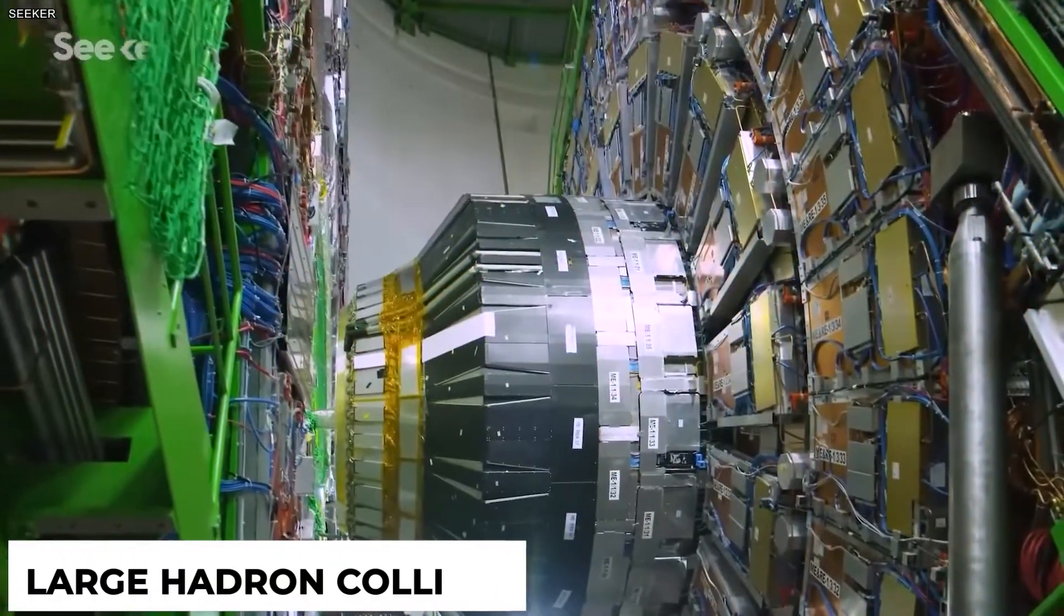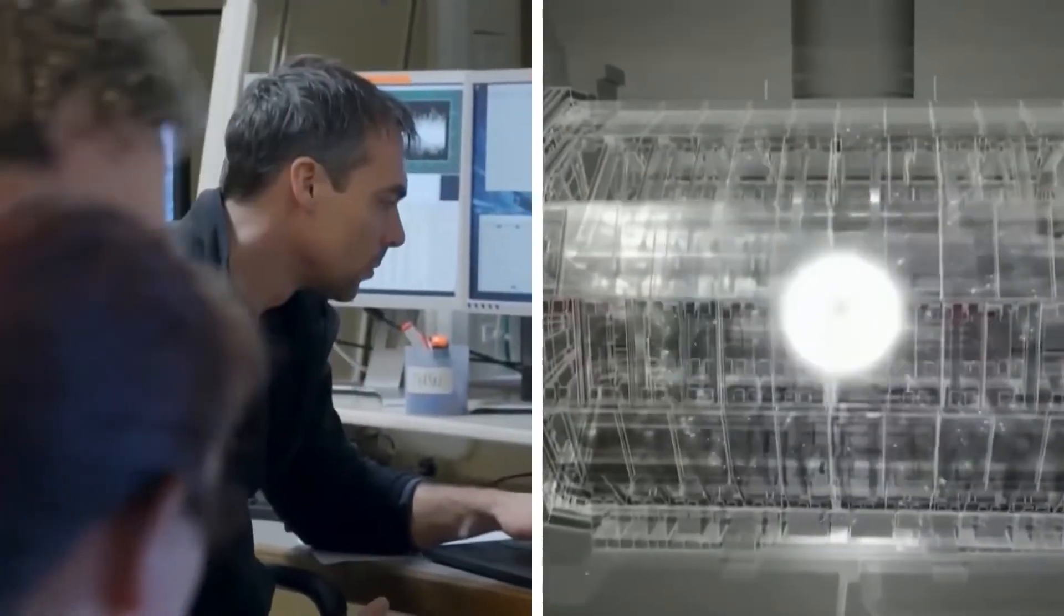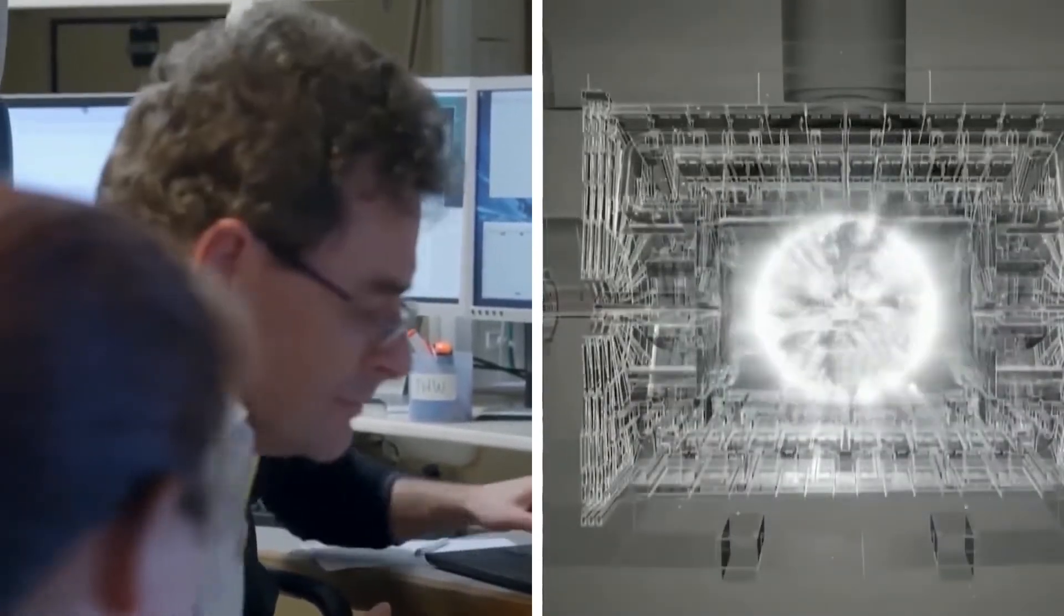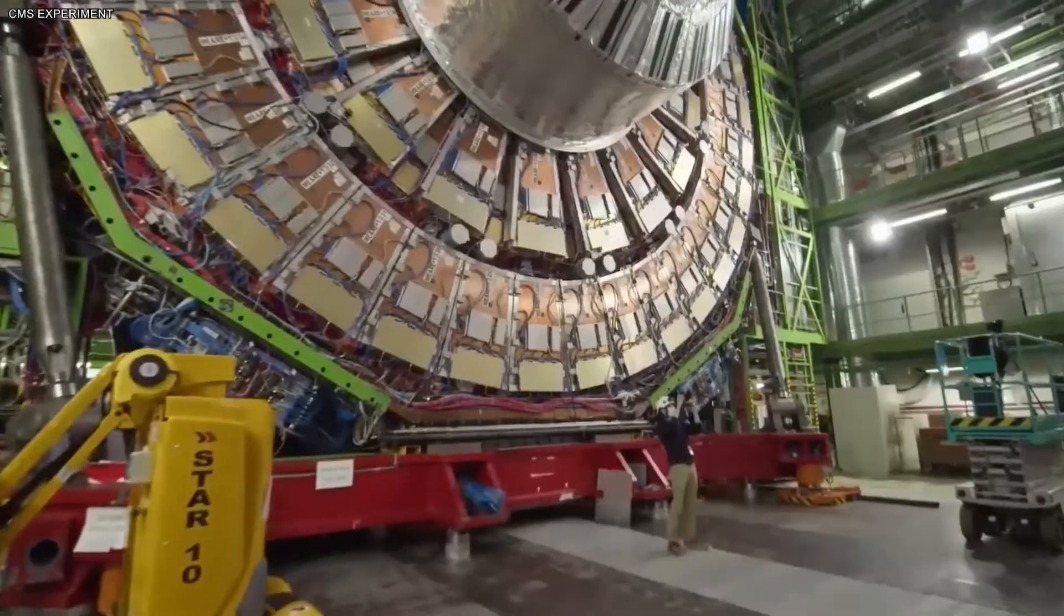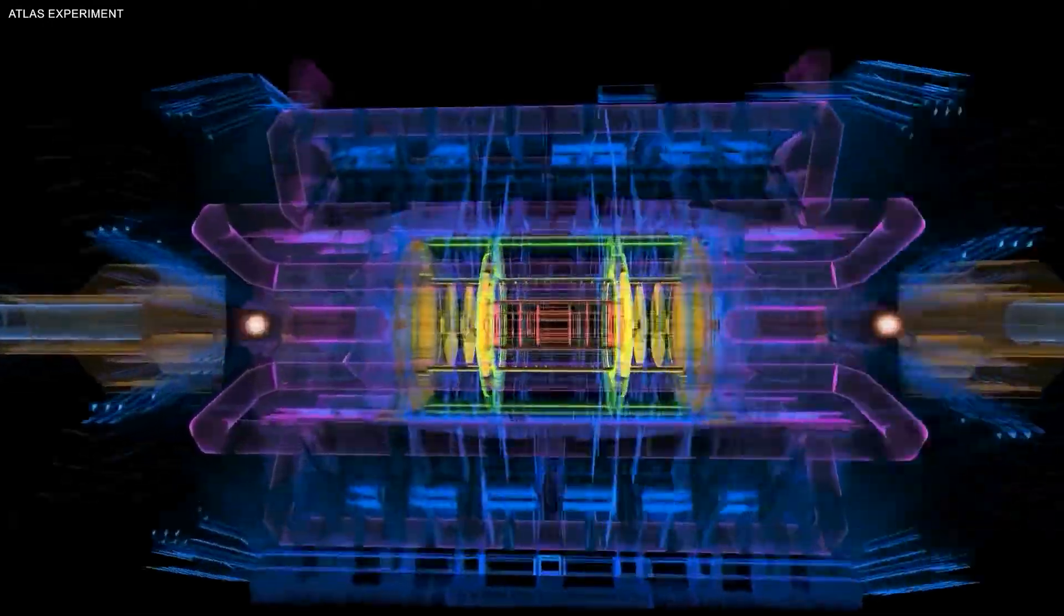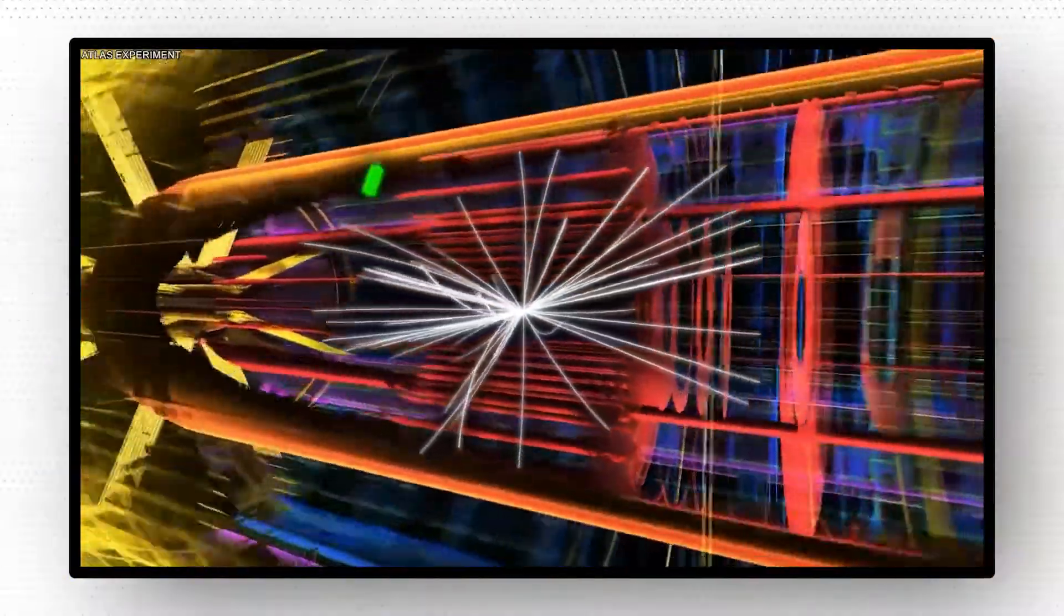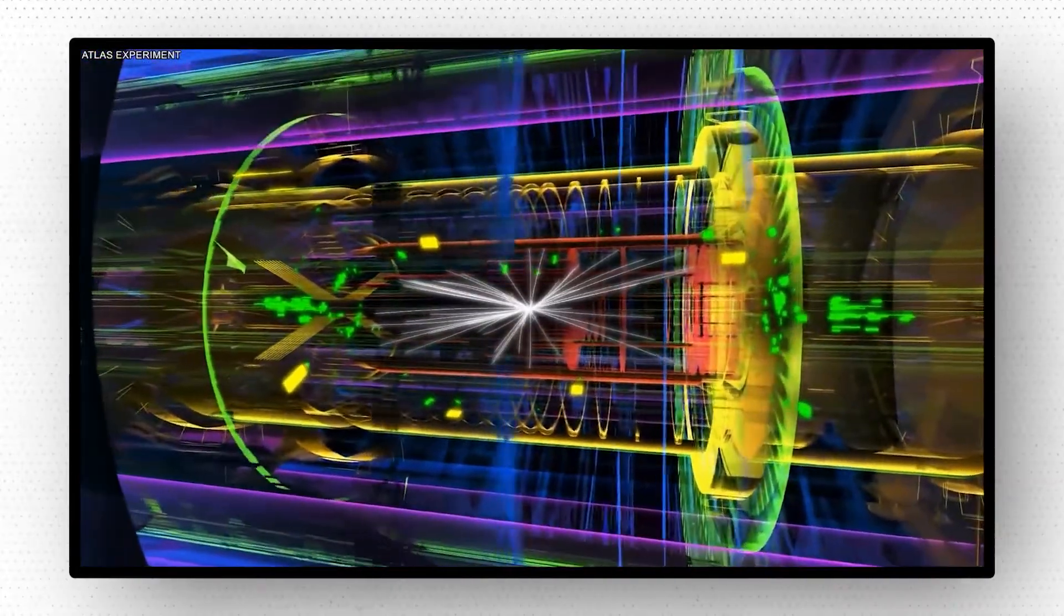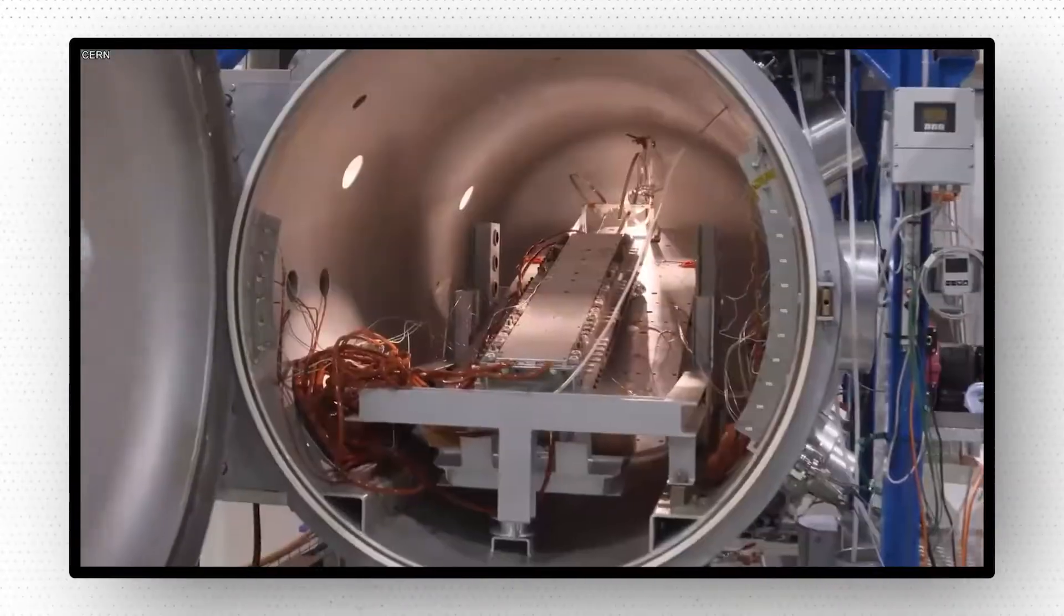The Large Hadron Collider is the most powerful and largest particle accelerator in the world. On September 10, 2008, it was launched and remains the latest addition to the CERN accelerator complex. The LHC consists of a 27-kilometer-long ring of superconducting magnets with a series of accelerating structures to increase the energy of the particles along the way.